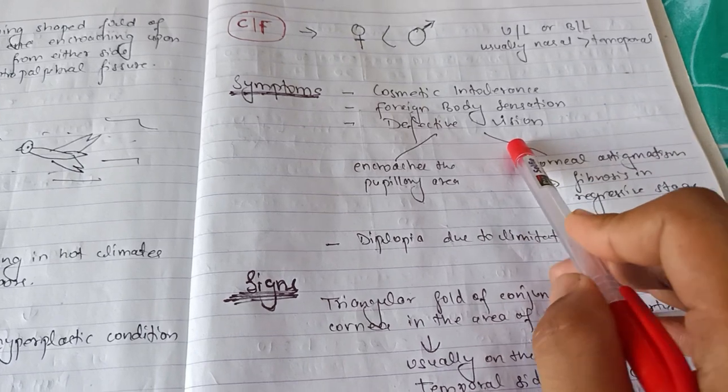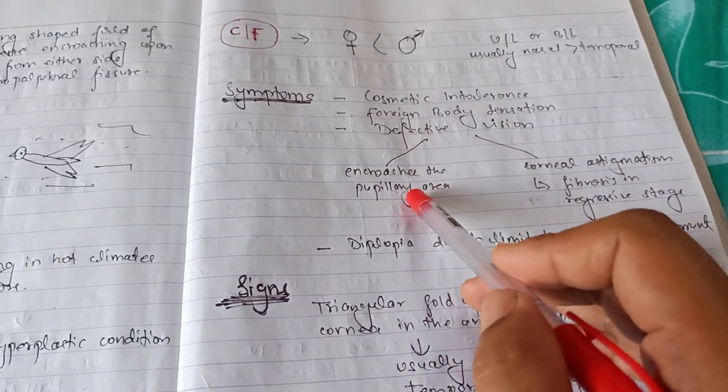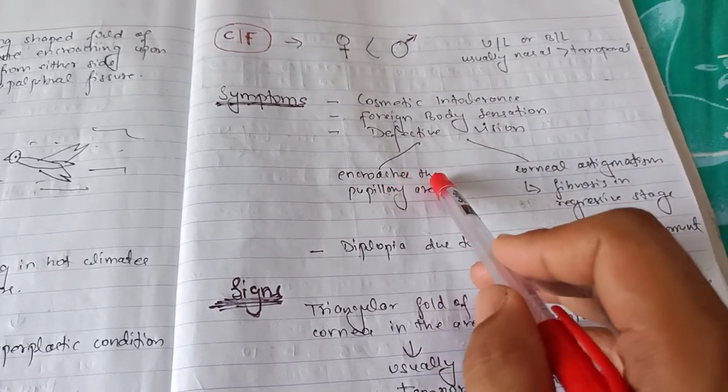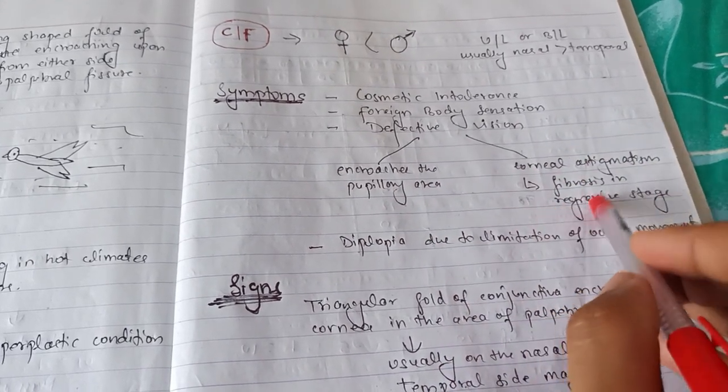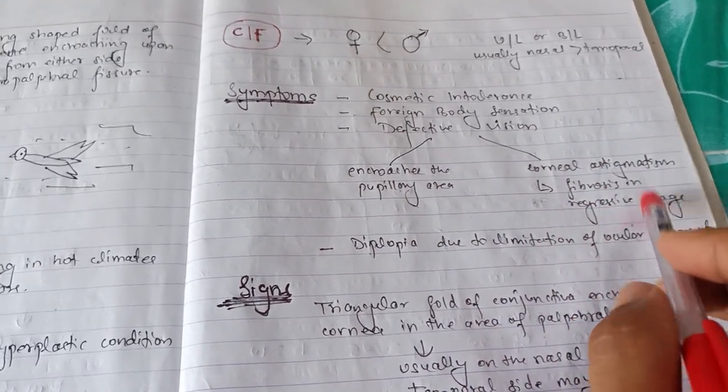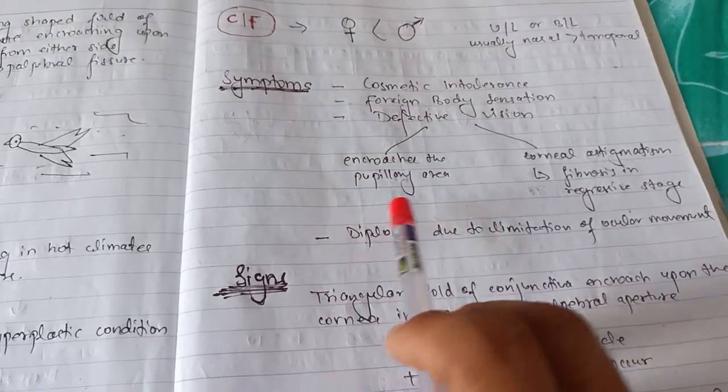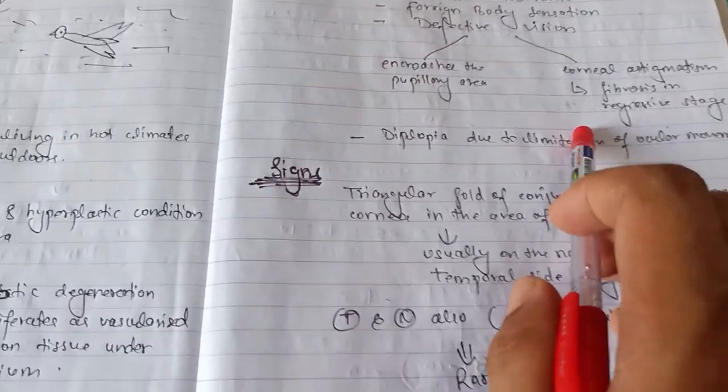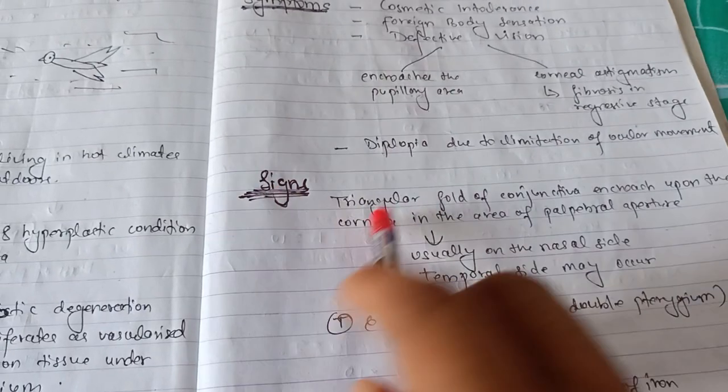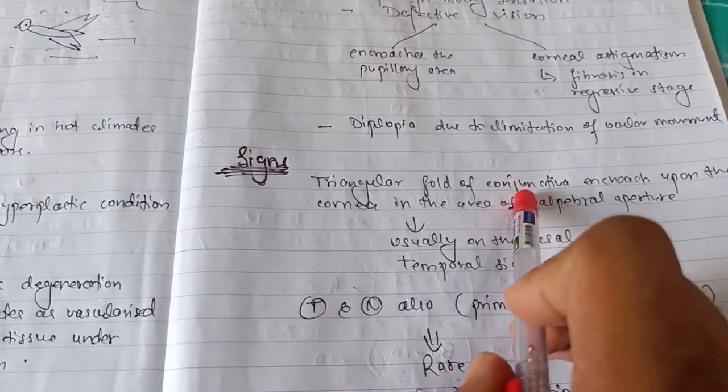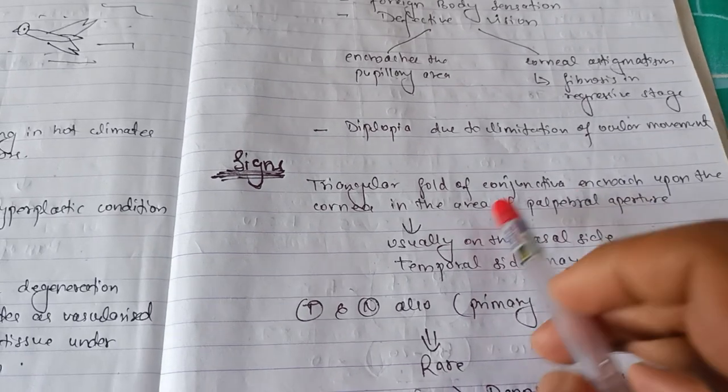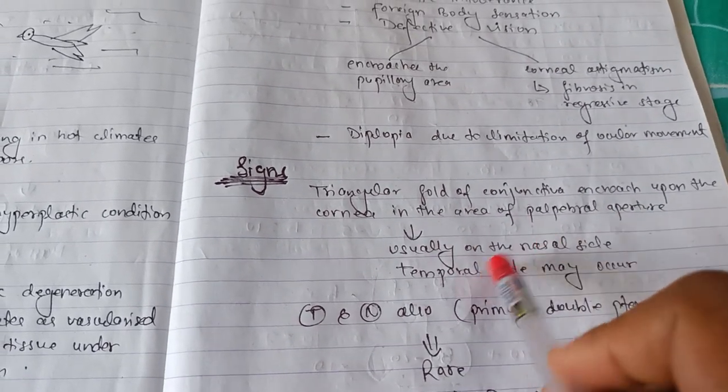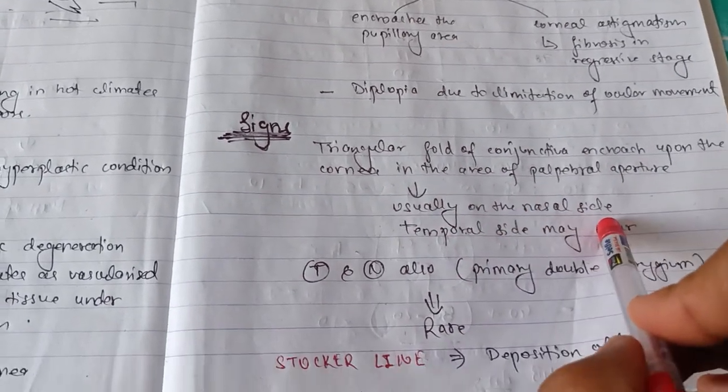Talking about symptoms: there is cosmetic intolerance, foreign body sensation, irritation, and defective vision. There are two reasons for defective vision: one is when pterygium encroaches the pupillary area, and another is corneal astigmatism. There is also limitation of ocular movement due to restriction.